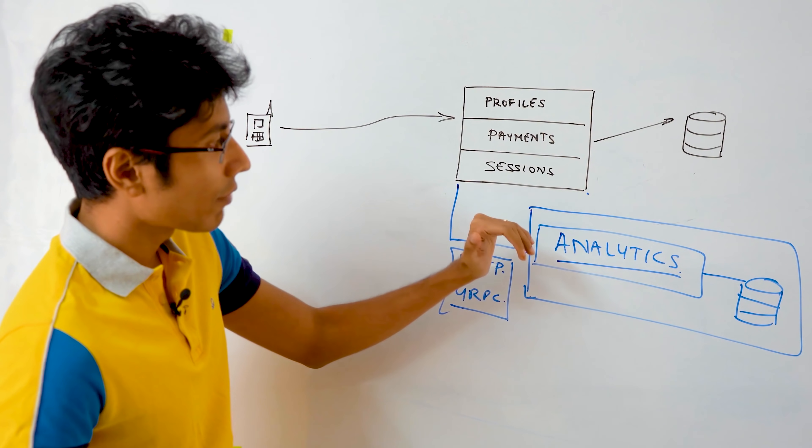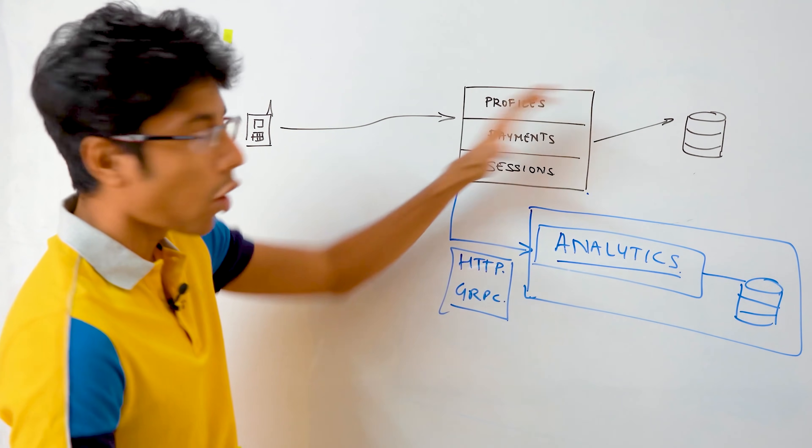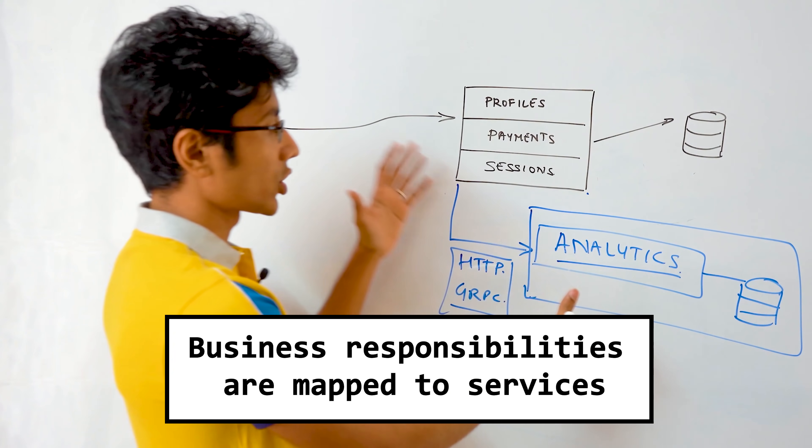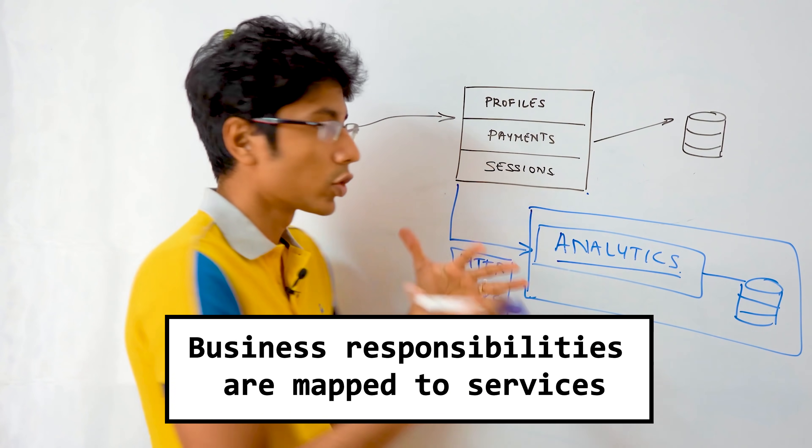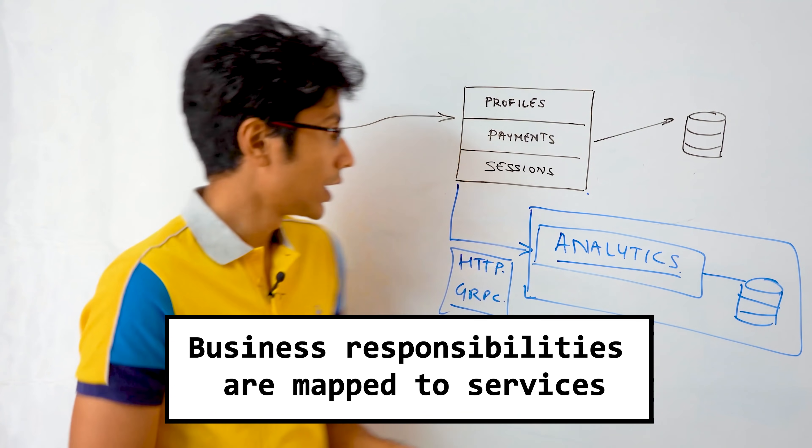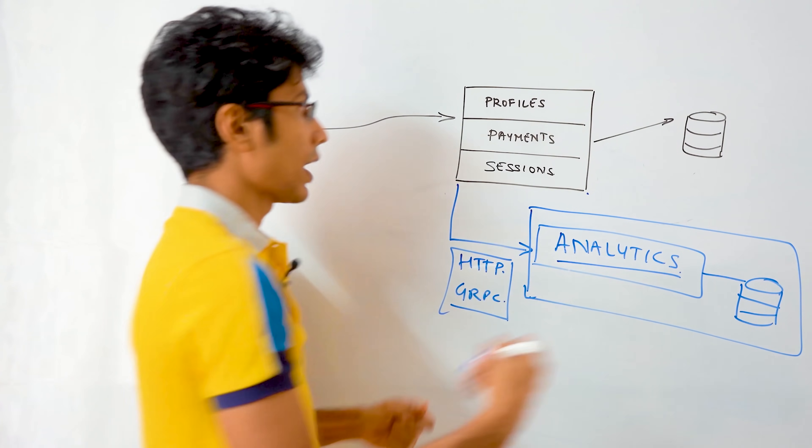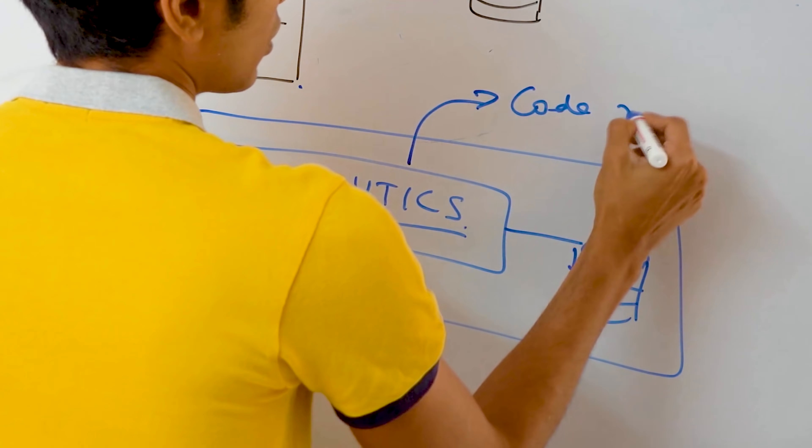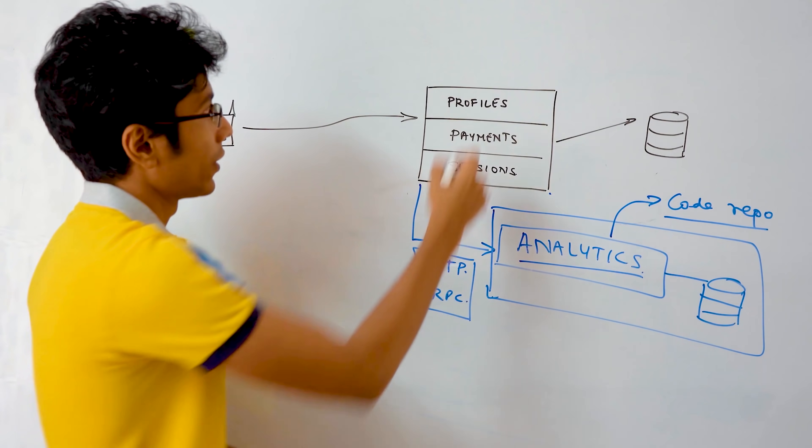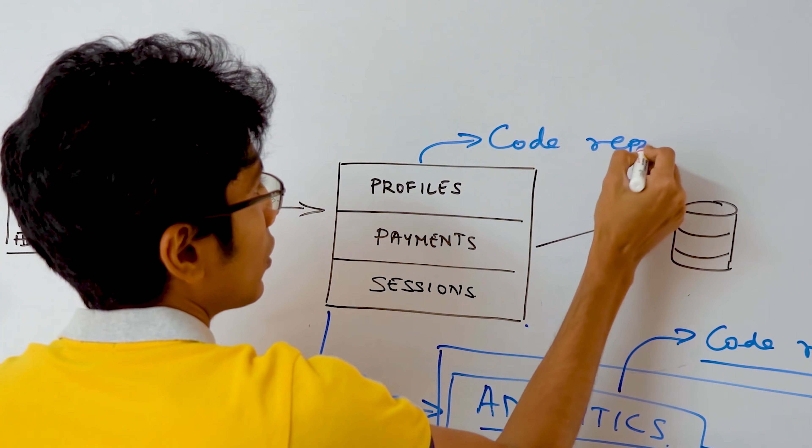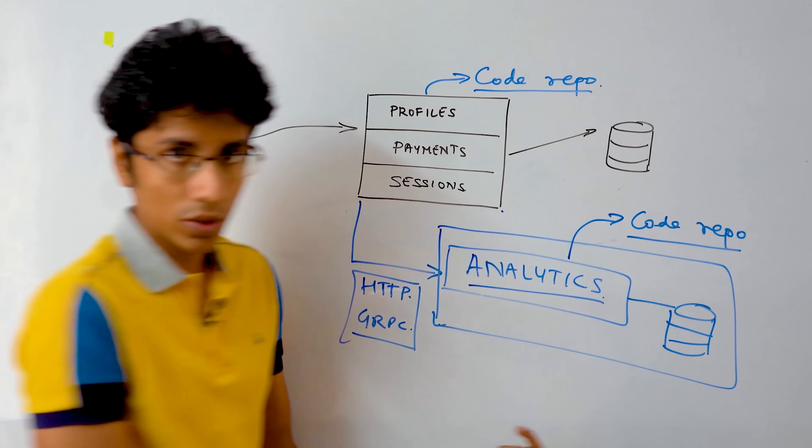And through this small change, what we have done is we have opened the possibility for all future services, all future functionalities being sent to their relevant services. So analytics is having its own code repository. This might be hosted on GitHub or wherever. And this has its own code repository, which is separate from the analytics code repository.